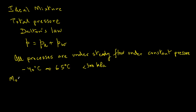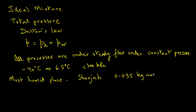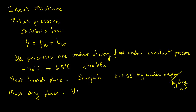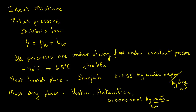For those interested in trivia, the highest recorded water vapor in the air was in Sharjah in the Gulf in Arabia, recorded as 0.035 kilograms of water vapor per kilogram of dry air — so it must have been very humid. The lowest recorded water vapor on Earth was in Vostok, Antarctica, at 0.0000001 kilograms of water per kilogram of dry air. That is the range of water in the air occurring in a natural state. We can modify the amount of water through other means, as we will see in the following modules.